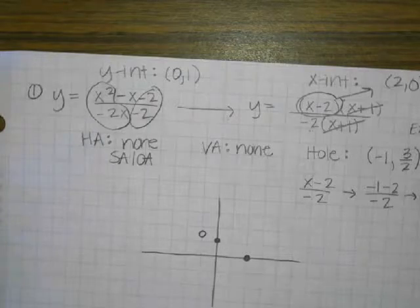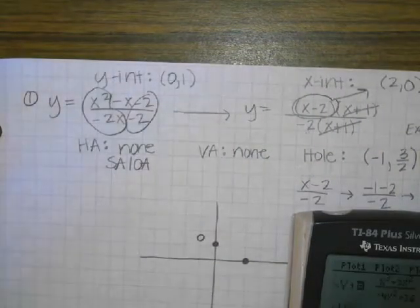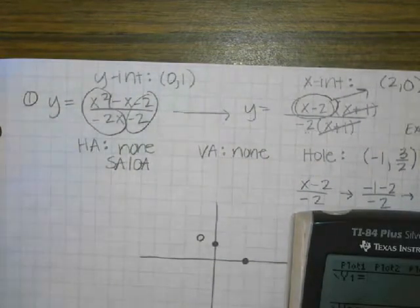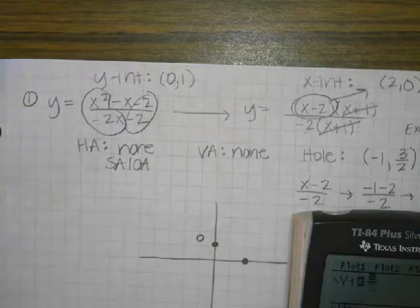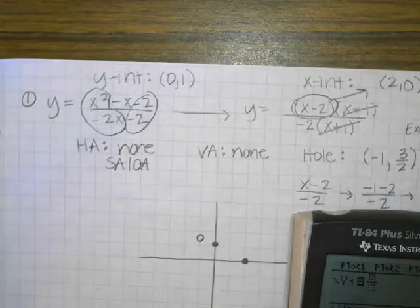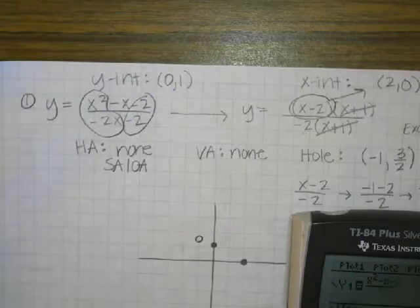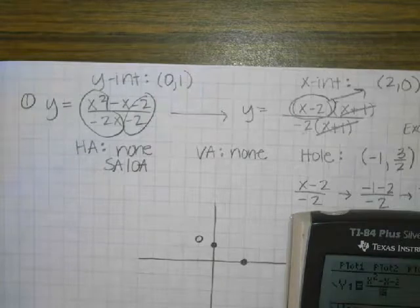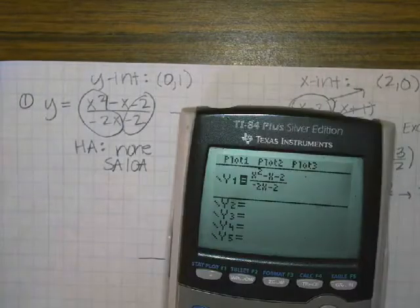Do you guys remember how to type in fractions on your calculator? Alpha Y equals. So at this point, do you want to type in the original one? I would say it's always good to type in the original and see what it looks like. And then one of the ways you can check to see if you factored correctly is to type in the factored version after that and see if the graphs look the same, because we know the original graph is right, and as long as our factored version looks like that, it means the factored equation was also correct.